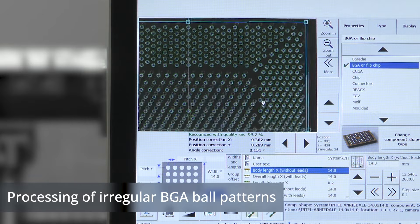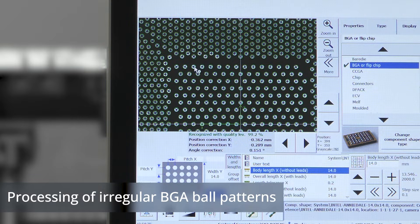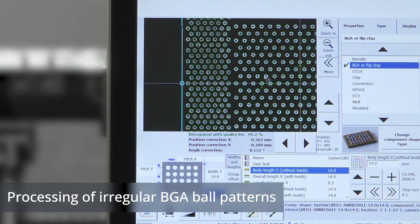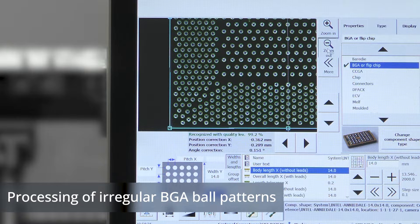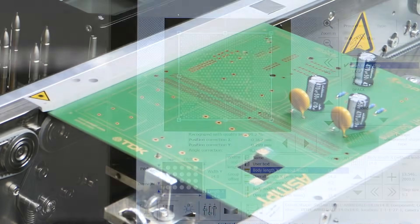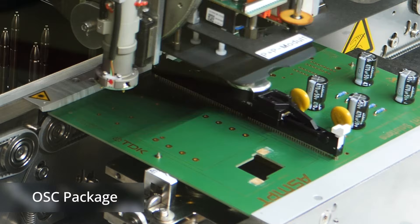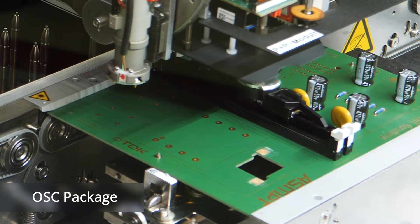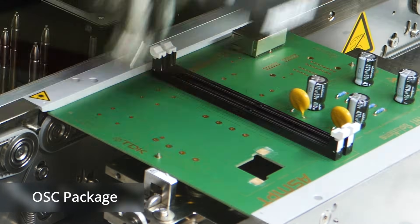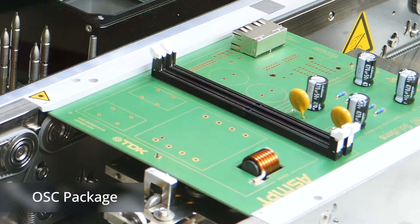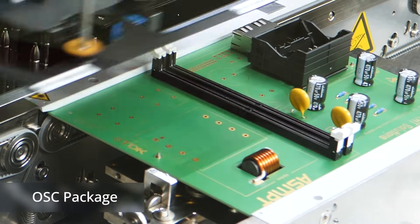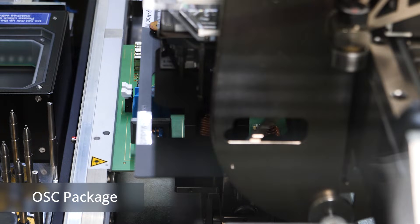The system can reliably scan and process irregular ball patterns, ensuring accurate detection and placement during assembly. Where others struggle with odd-shaped or large components, the C Place SX excels. The OSC package allows for seamless handling of challenging components, minimizing manual labor and maximizing your yield.